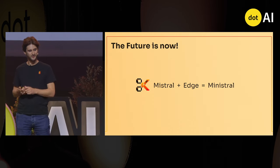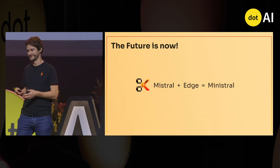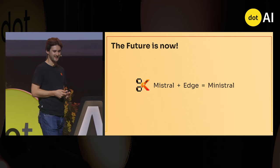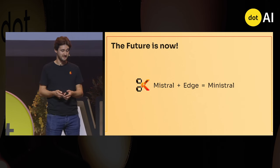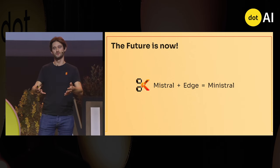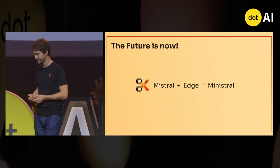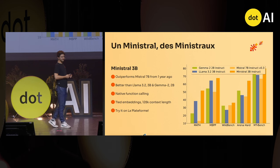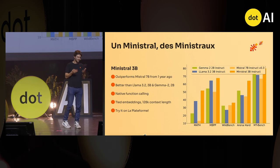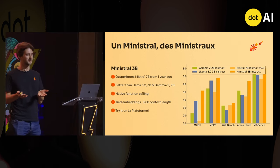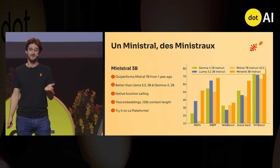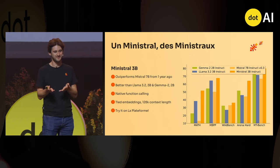That's why I'm super thrilled to introduce Ministral — the edge model we released just yesterday, fresh from the oven. What we really tried to do is push the frontier and make these models as good as possible. Introducing Ministral 3B: a 3 billion parameter model that is more than two times smaller than Mistral 7B.